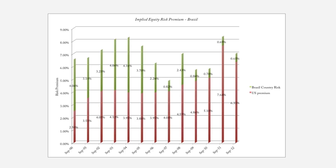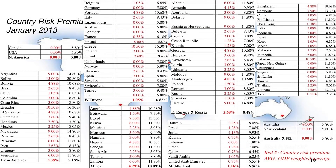Use either the rating-based default spread approach or an implied premium to come up with risk premiums by country. At the start of every year, I develop a table of equity risk premiums by country. I start with the base premium — for 2013, that's the 5.78% implied premium for the U.S., rounded to 5.8%. That is the premium I use for every mature market, defined as any country with a AAA rating. Every other country gets an additional premium based on the rating, default spread, and adjustment for additional risk. This table gives you the entire picture of equity risk premiums by country.